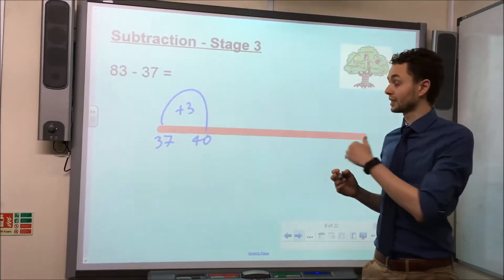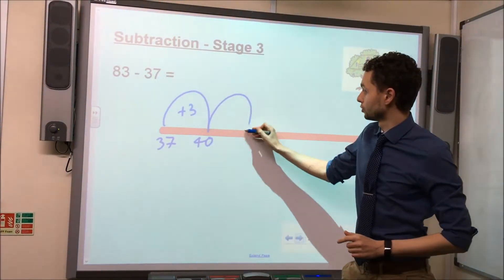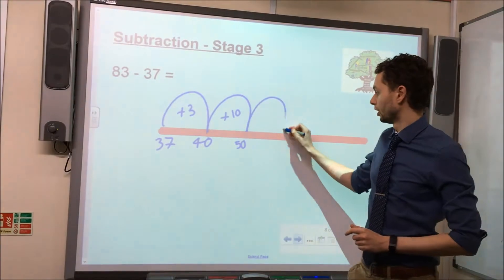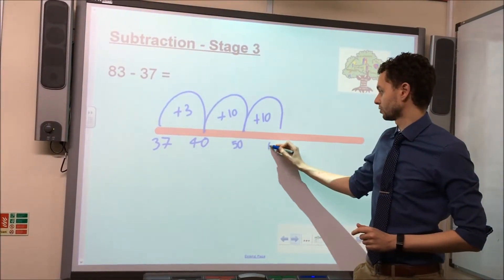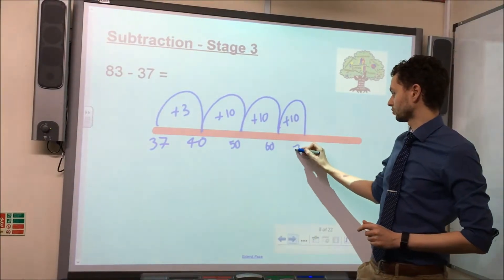We then encourage them to count up towards the target number, in this case 83. So another jump of 10 would take us to 50. Another jump of 10 would take us to 60. One more jump of 10 takes us to 70.